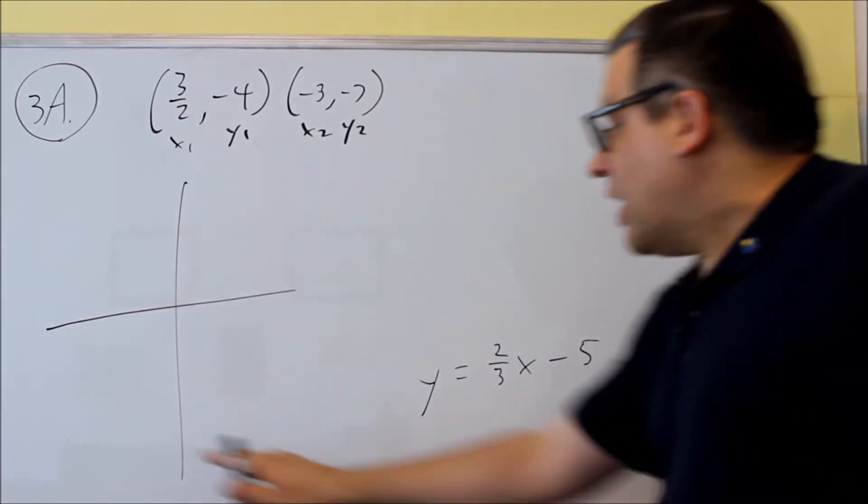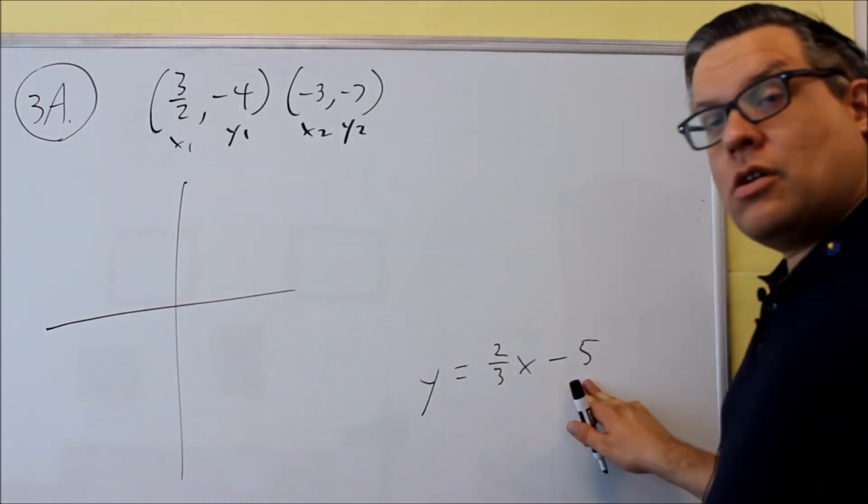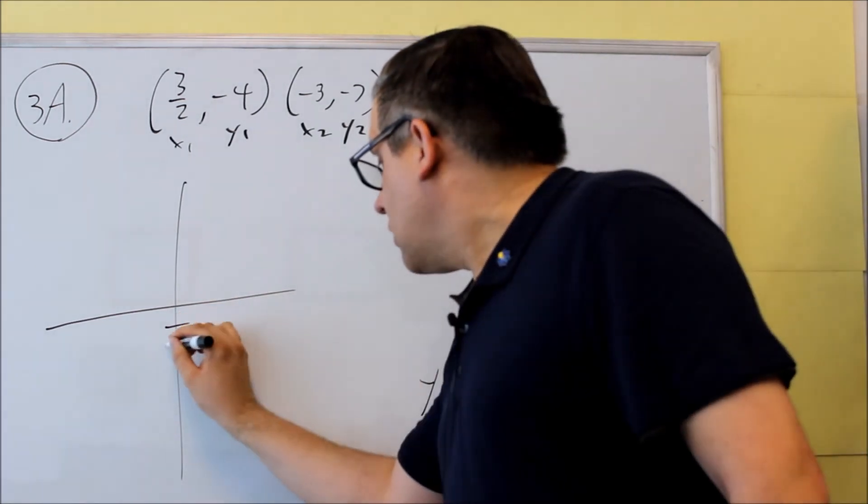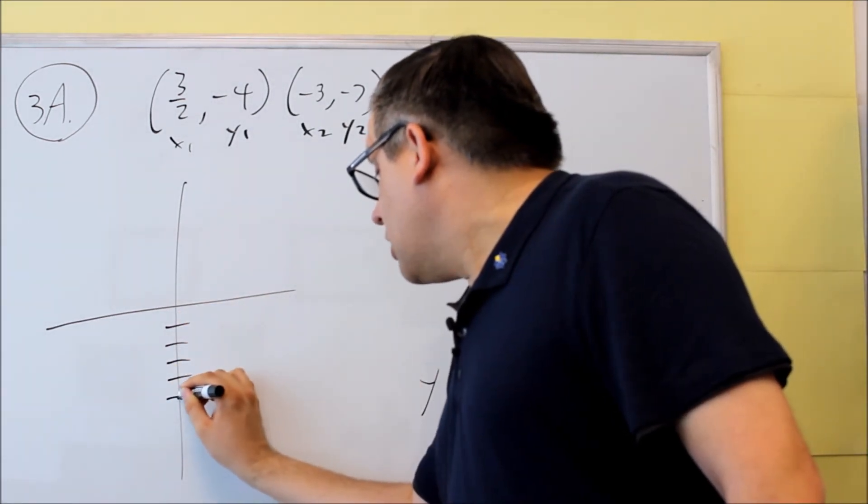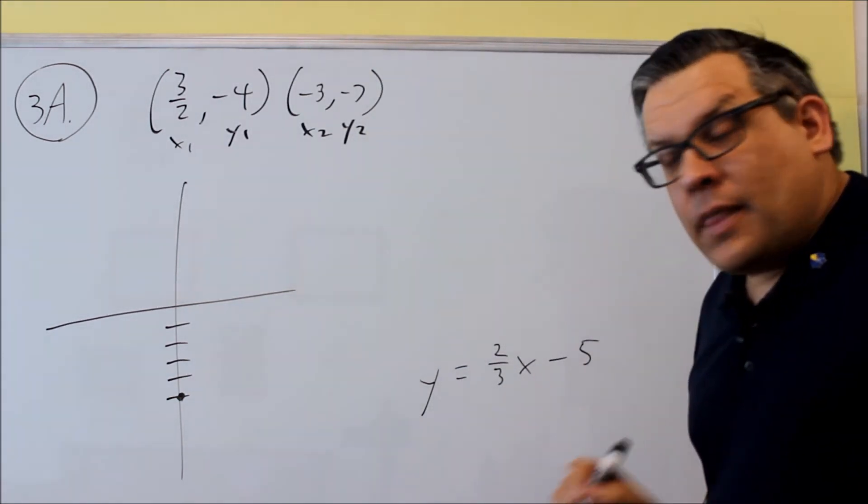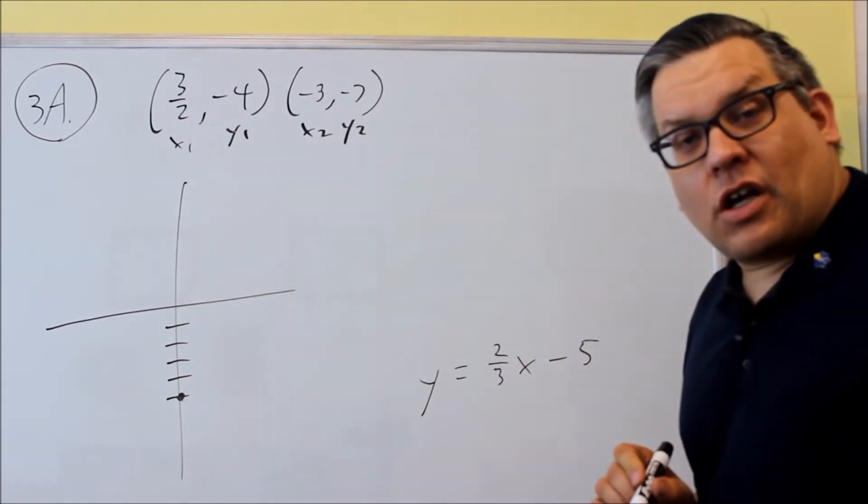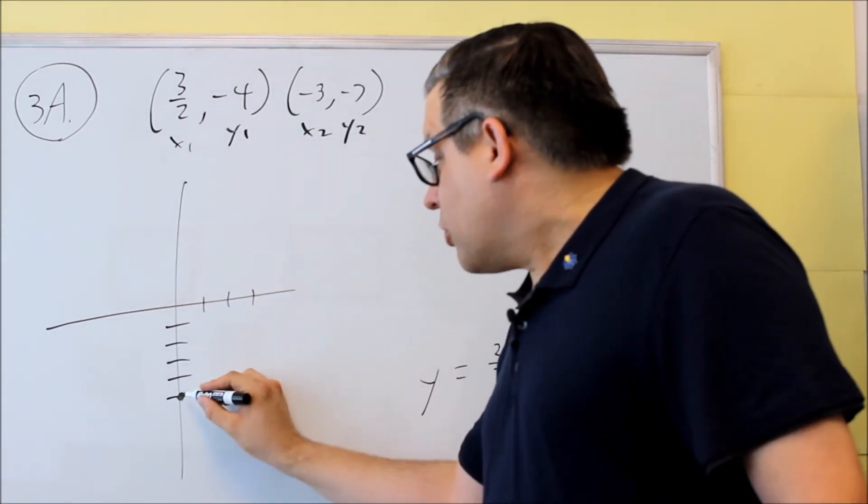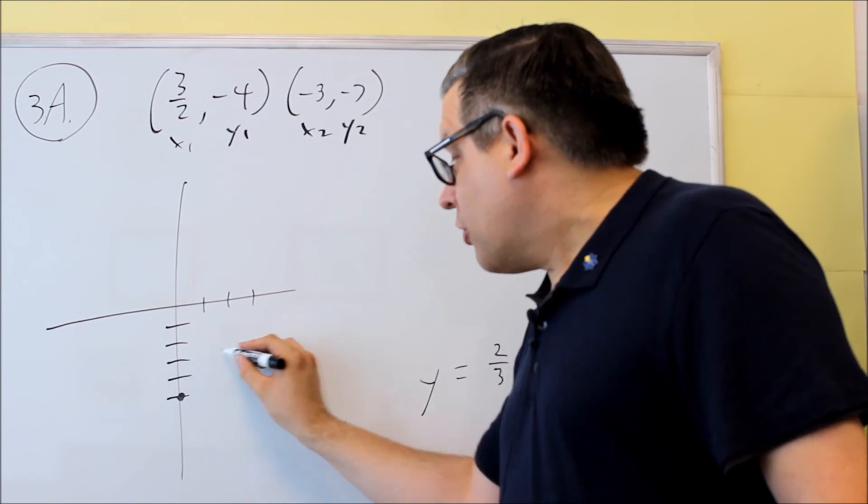So what we do with that is we're going to start with the y-intercept, negative 5. That's going to be right here. Then we're going to use our slope in order to get the next point that's on that line. So from negative 5, what we're going to do is we're going to go up 2 and then we're going to go 3 to the right.